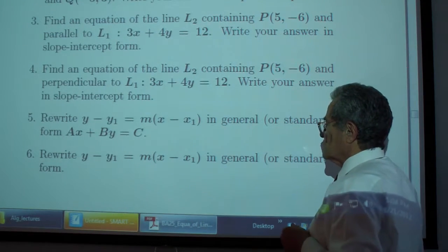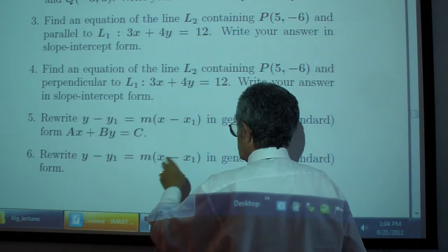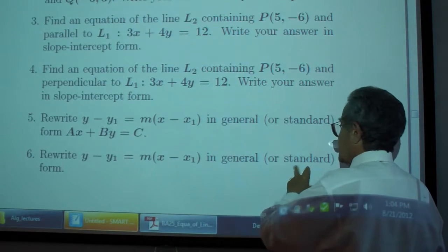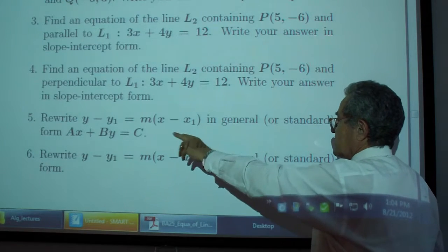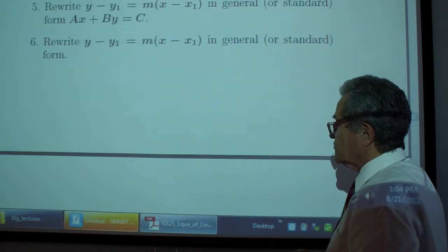Example 6: Rewrite y - y₁ = m(x - x₁) in general or standard form ax + by = c.